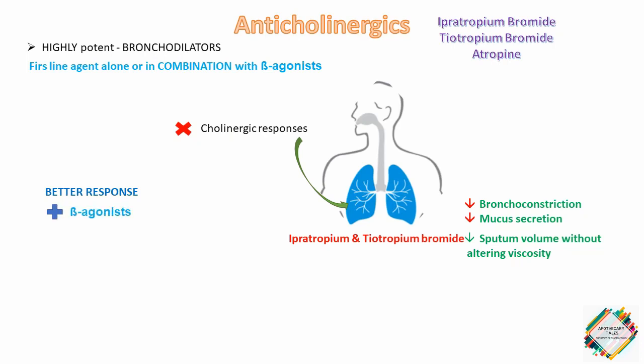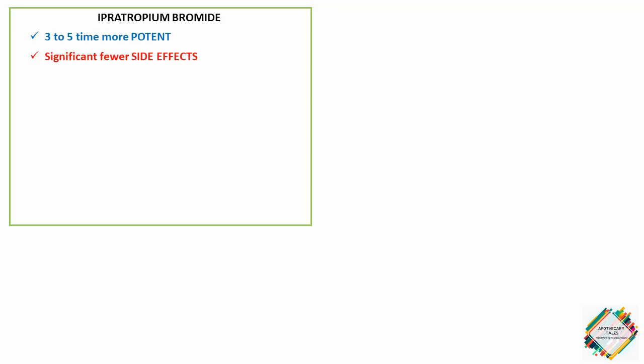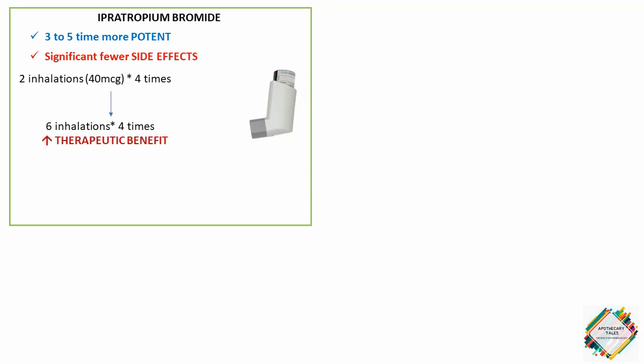Ipratropium bromide is about 3 to 5 times more potent and has significantly fewer side effects than atropine, which is rarely used today. The initial metered-dose inhaler dosing of ipratropium bromide is 2 inhalations (40 micrograms) 4 times daily, but dosing can be increased to 6 inhalations 4 times daily without significant risk. Administration should be via metered-dose inhaler with spacer, or metered-dose inhaler alone using a closed-mouth technique.